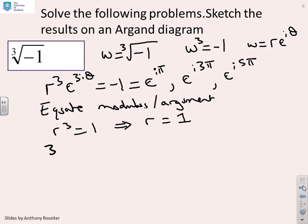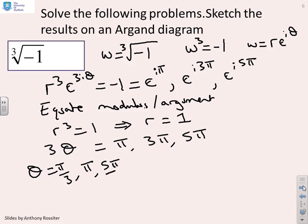So now what I can do is equate the modulus and the argument on each side. So you'll see I get r cubed equals 1, which tells me that r equals 1. That was the easy bit. And I also get 3 theta equals pi, or 3 pi, or 5 pi, which tells me that theta equals pi by 3, or pi, or 5 pi by 3.